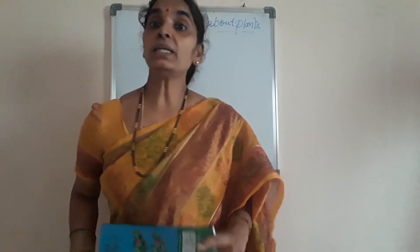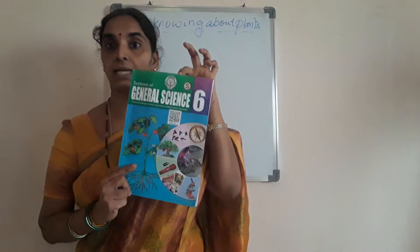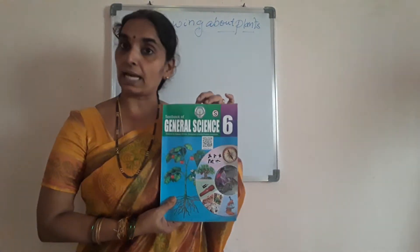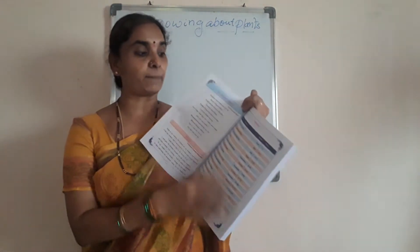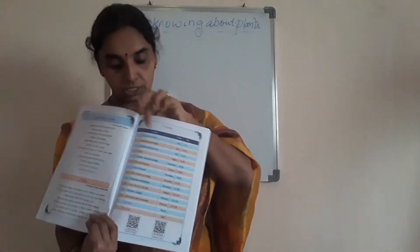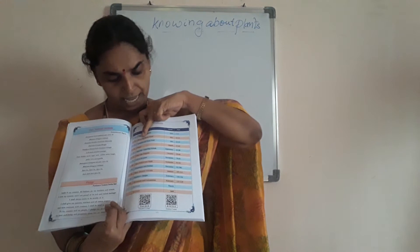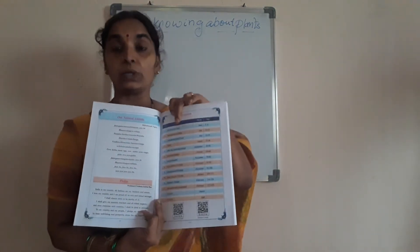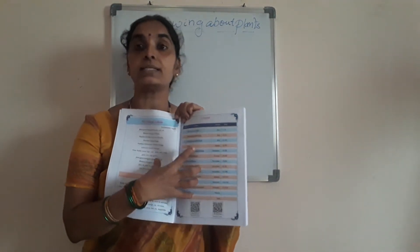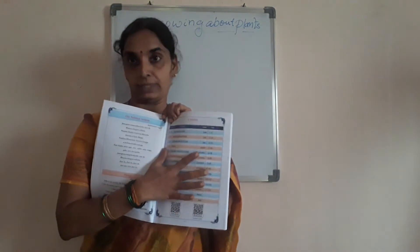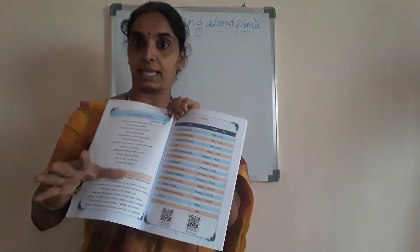The textbook has now been changed by the government of Andhra Pradesh. This is the textbook of general science for class 6th. The portion I have covered is the same and the topics are the same, but the lesson numbers have changed. The first lesson 'Our Food' is now called 'The Food We Need,' and the second lesson is 'Knowing About Plants,' which I am going to tell you now. We have also completed the third lesson about what animals eat.